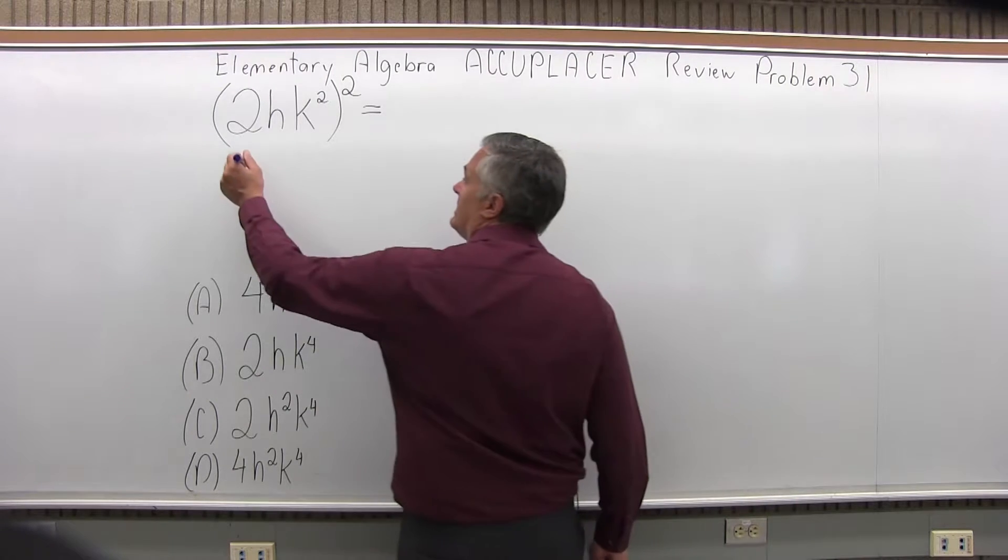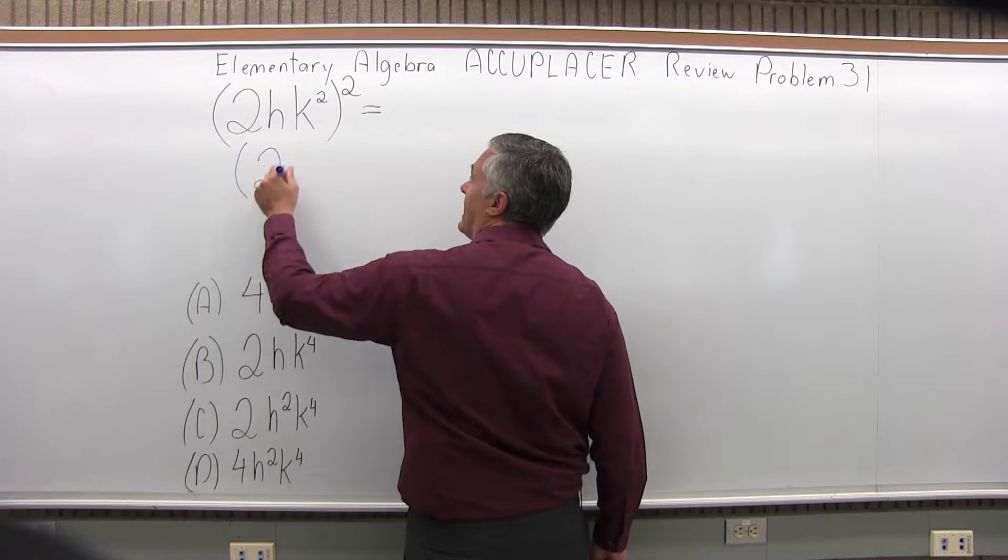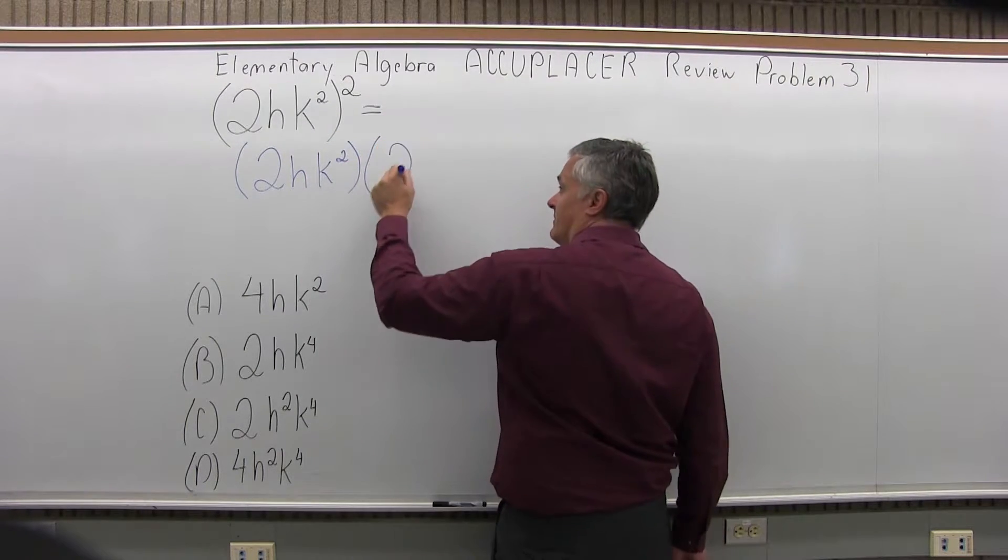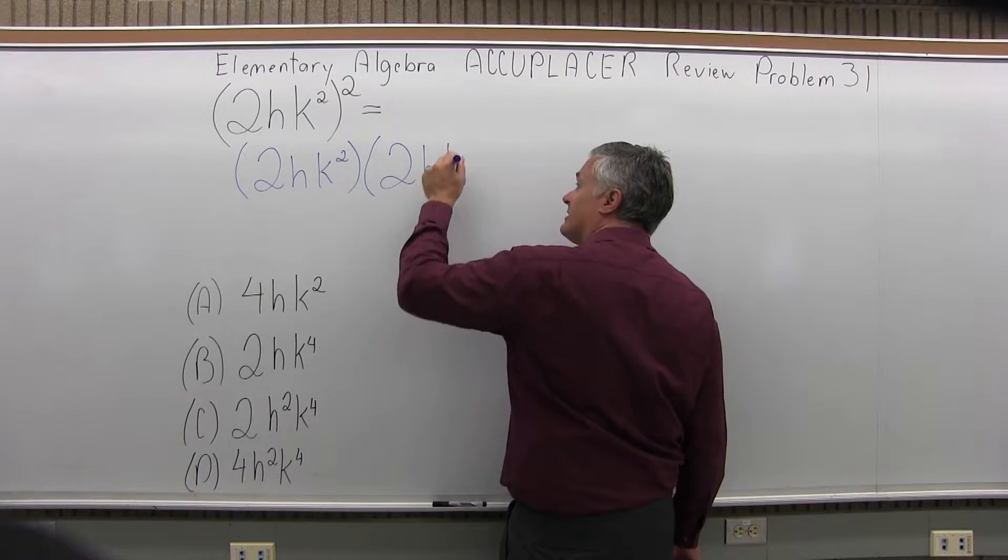So what that means is we have 2HK to the second in a set of parentheses, times itself, so another 2HK to the second in parentheses.